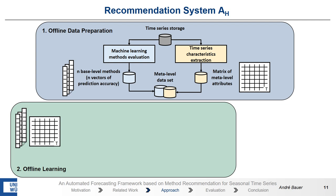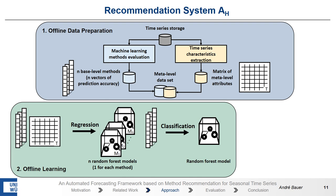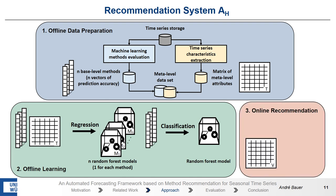Our last approach is a hybrid approach that combines the regression and the classification task. It gets the same input, and with regression n random forest models are built — each model represents a machine-learning method and models the forecasting error. The key is that we compare the forecasted error with the actual error, and then we use this difference to train another random forest model via classification to determine what method is the best after estimating its own error. When we have new time-series, we calculate the estimated errors of each method, and then the classifier chooses the best method for each time-series.